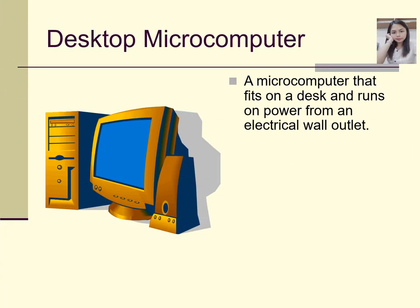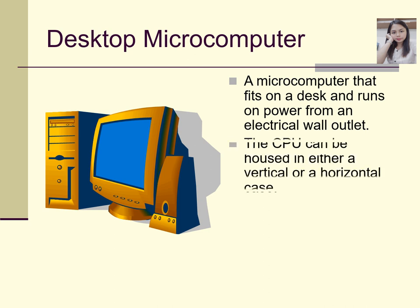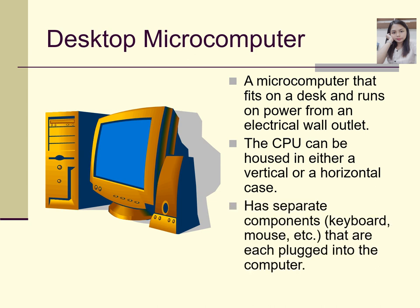A desktop computer is a microcomputer that fits on a desk and runs on power from an electrical wall outlet. Some of you may have desktop computers. The CPU can be housed in either a vertical or a horizontal case, with separate components — keyboard, mouse, etc. — each plugged into the computer. The correct name for the main box is the system unit, and there is also the speaker and the monitor.